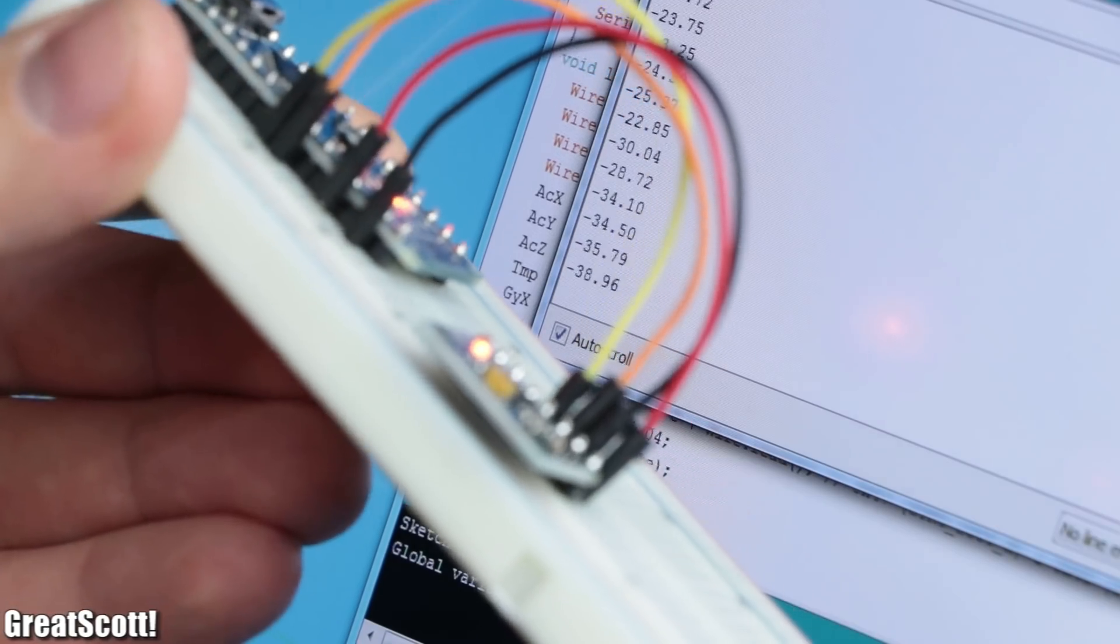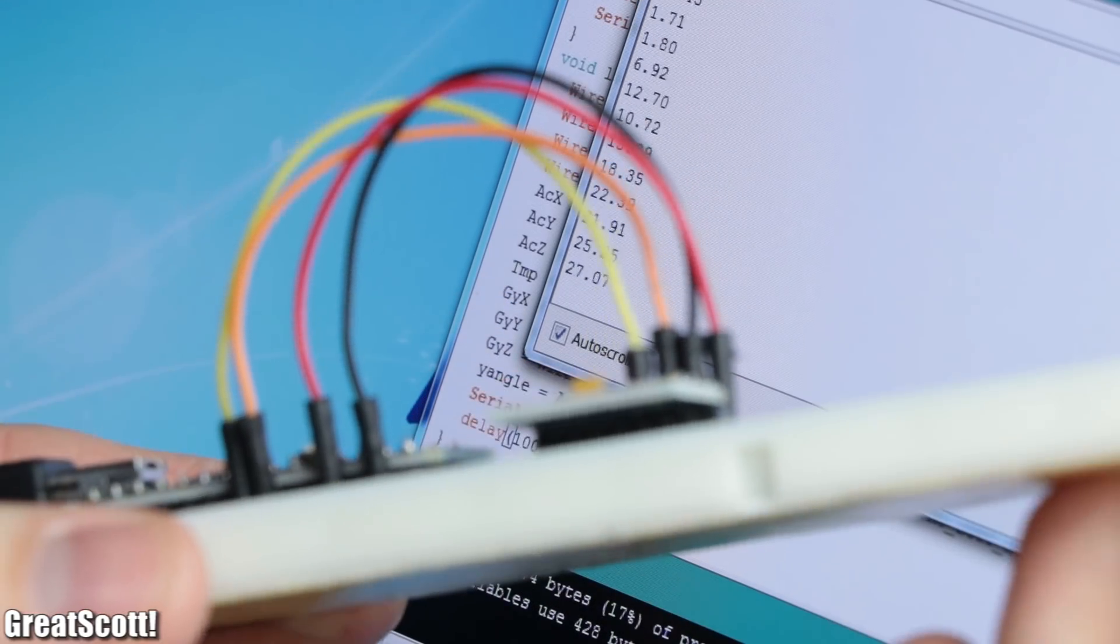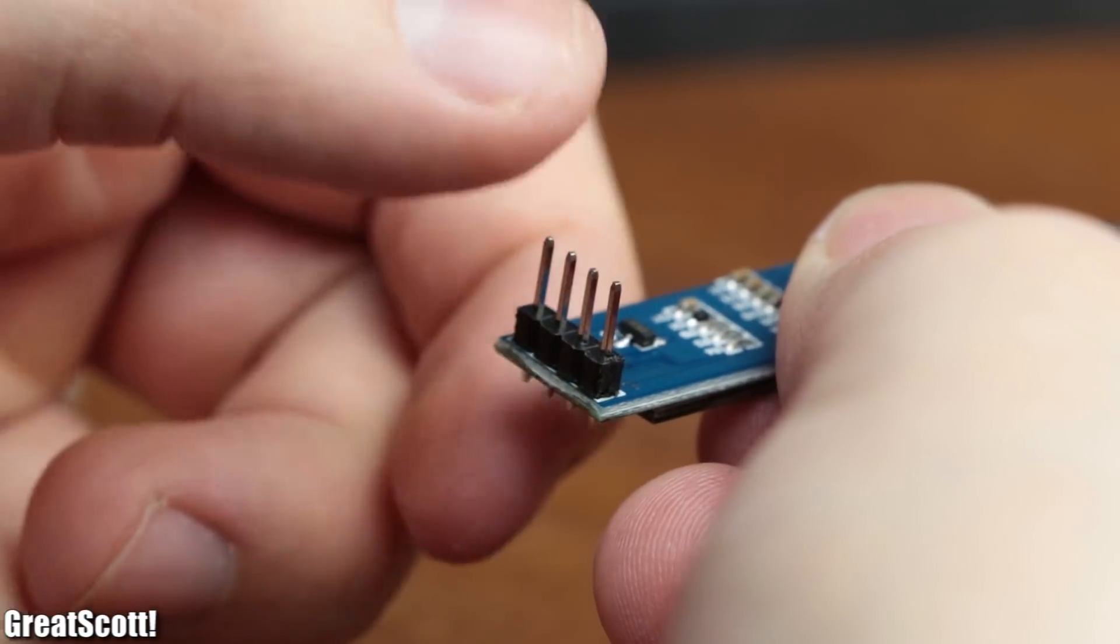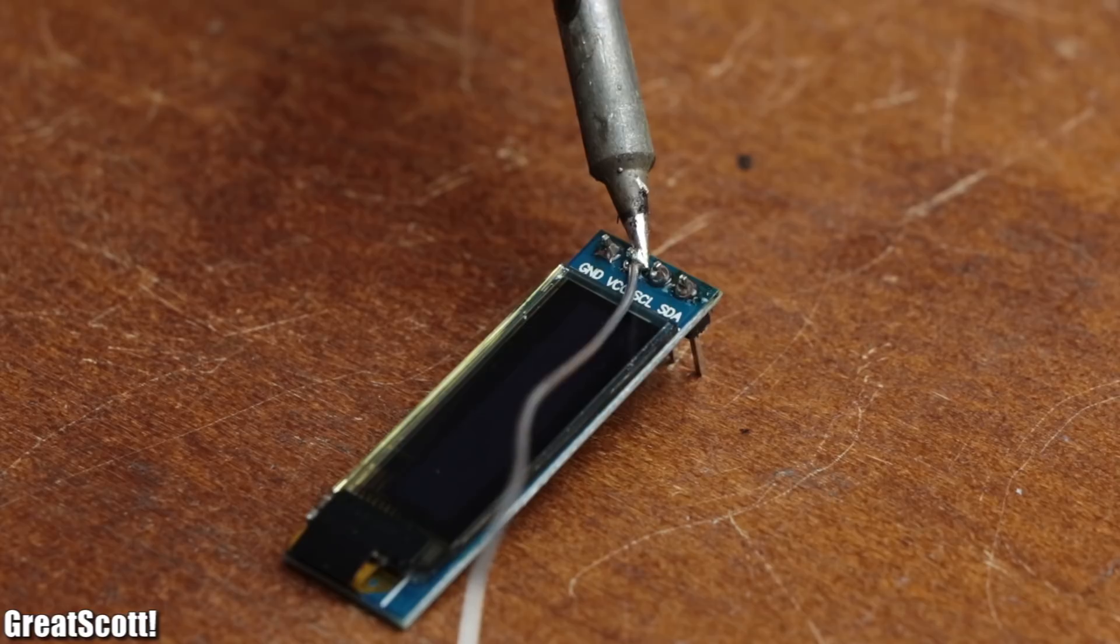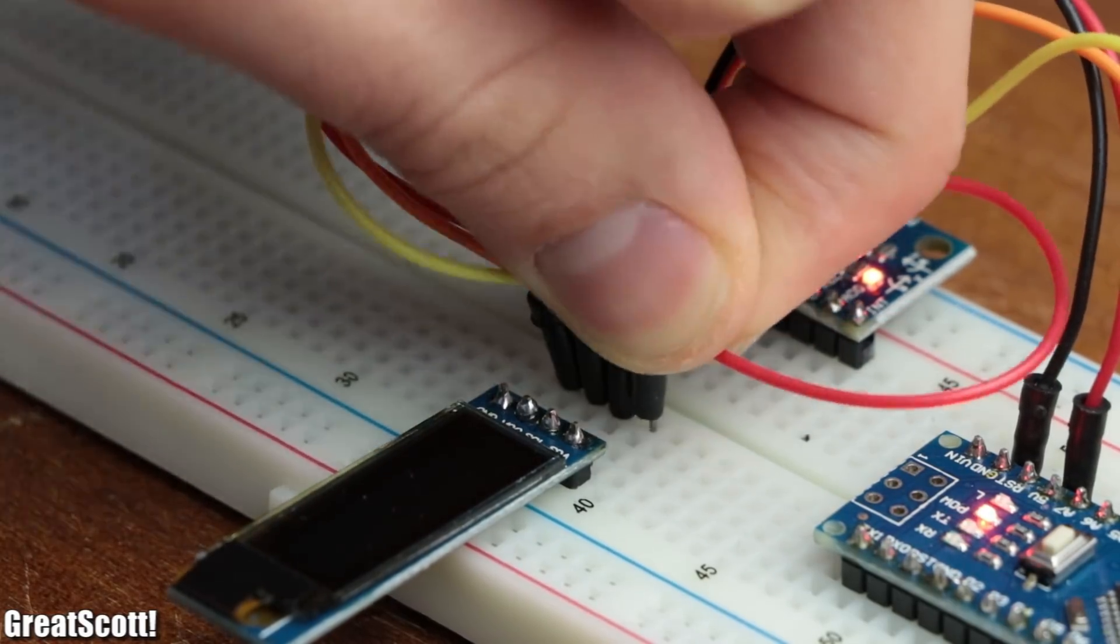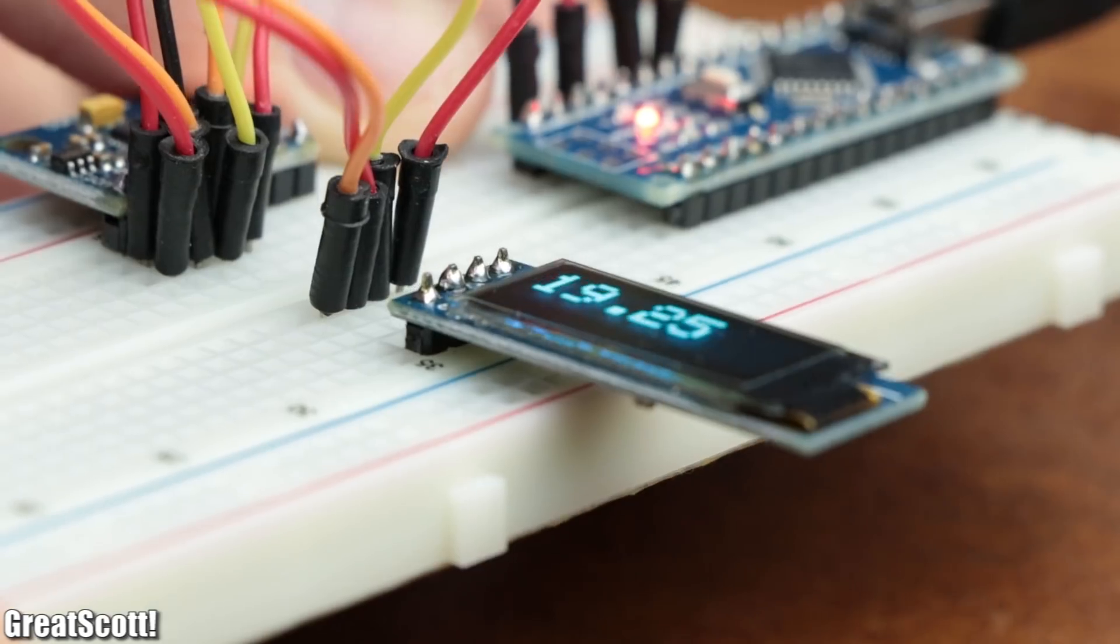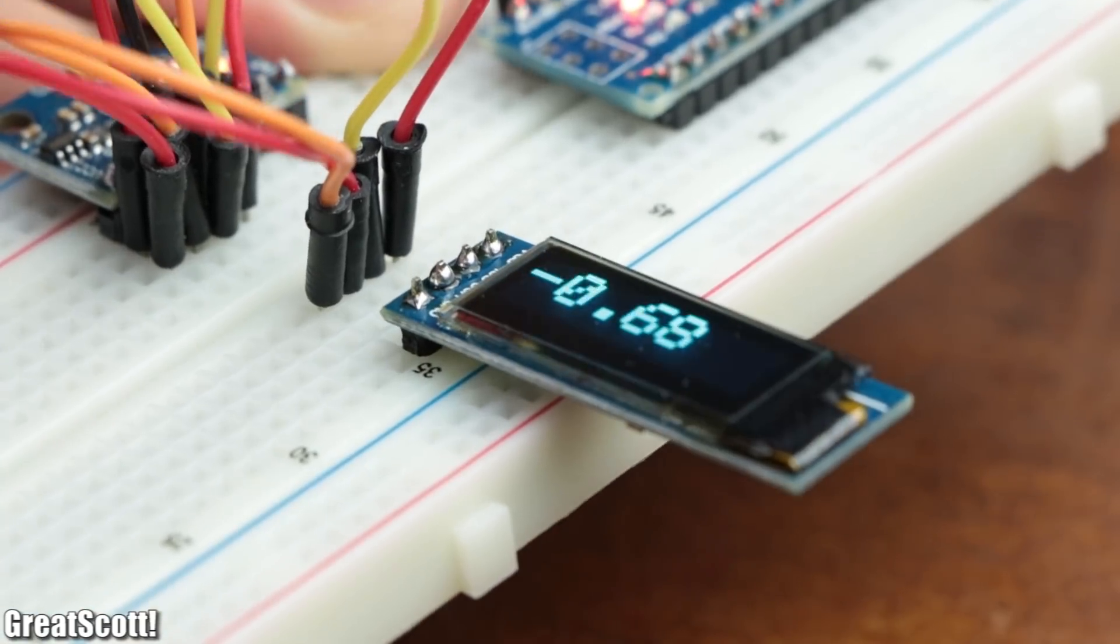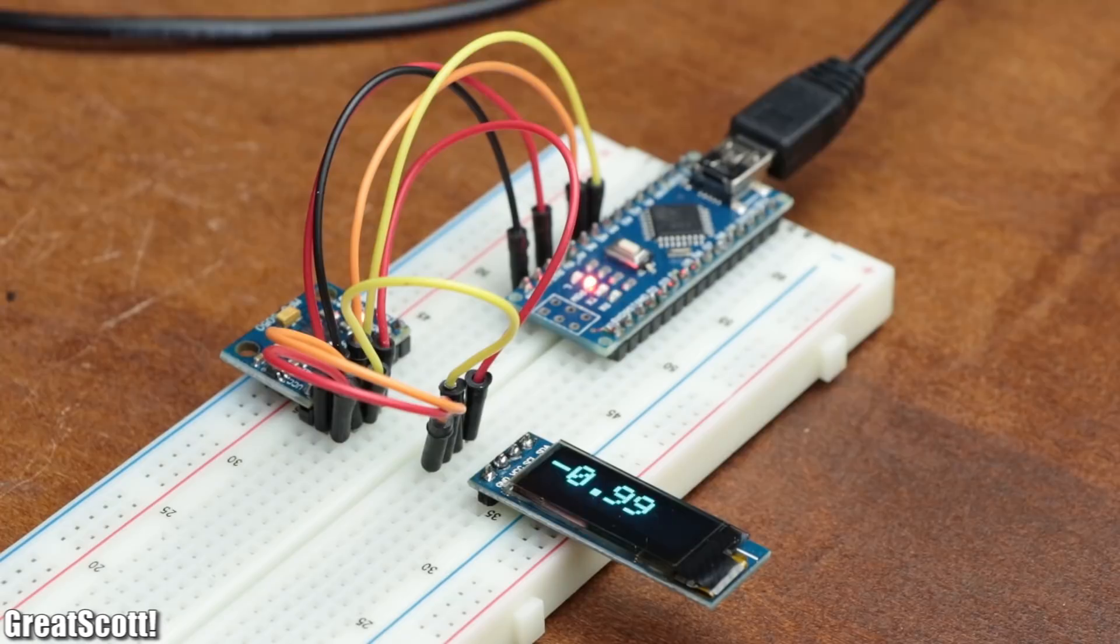But I'm getting off topic here. Right now, we only got a prototype of a digital spirit level, so to turn it more into a proper tool, I added a small 128 by 32 OLED screen to the breadboard, which I also hooked up to the I2C lines of the Arduino. After adding a couple lines of code more by mostly relying on the Adafruit SSD 1306 library, I was then able to output the calculated angle to the display, which revealed a small problem.